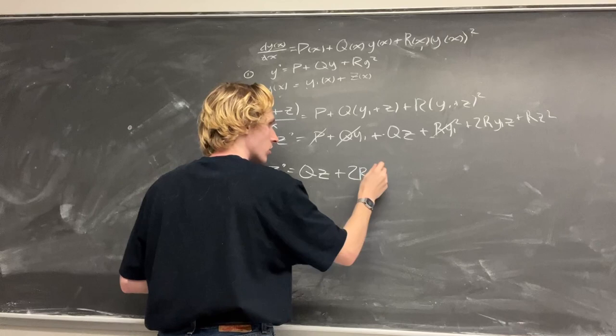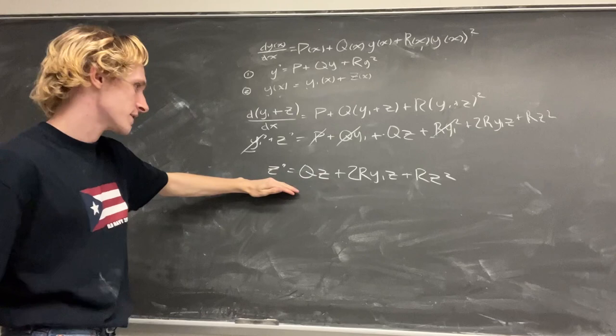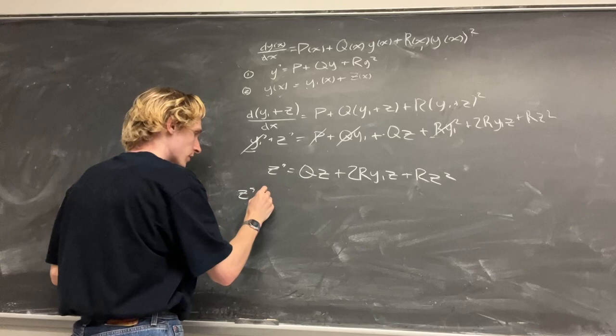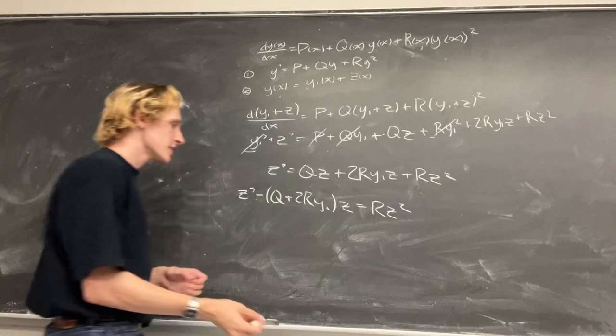z' = qz + 2ry_particular·z + rz². So what we're going to do is move this over to the left-hand side, leave this, and factor out the z. So we say that z' - (q + 2ry_particular)z + rz², which is exactly what we were looking for, and is our general solution of the Riccati equation in terms of the Bernoulli equation and its particular solution.